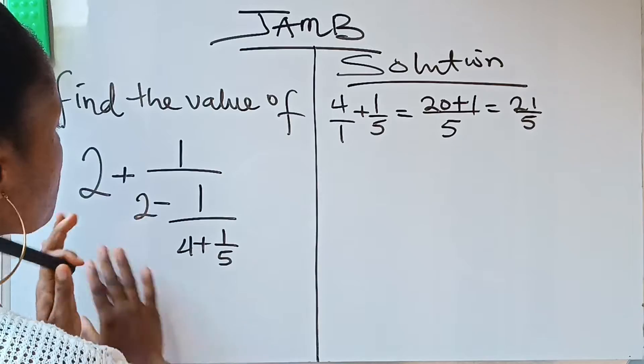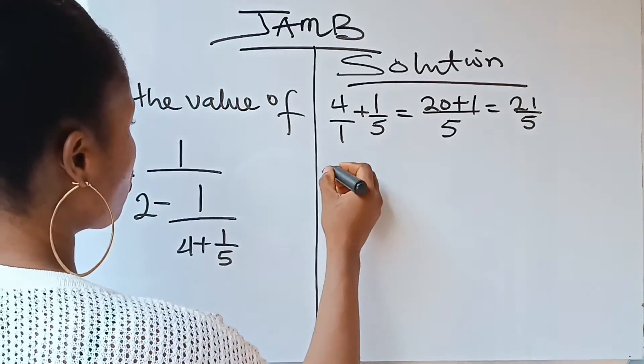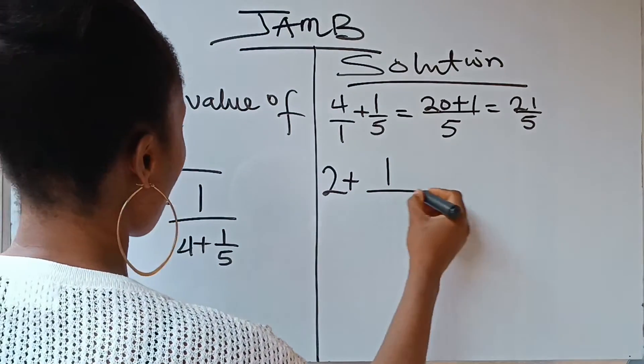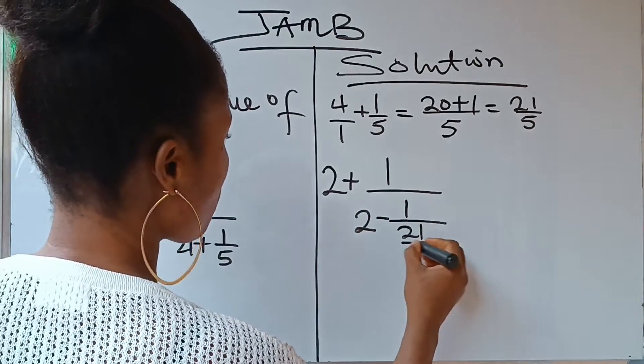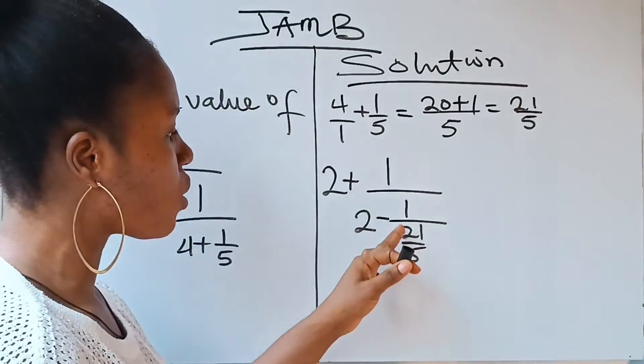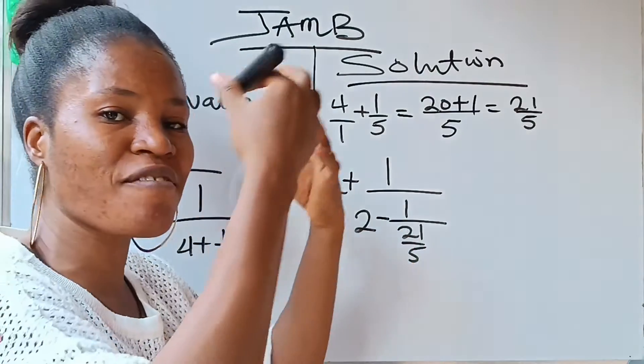So you are now going to rewrite this question as 2 plus 1 over 2 minus 1 over 21 over 5. Now, what is 1 over 21 over 5? That is the inverse of 21 over 5.